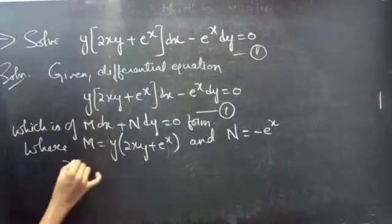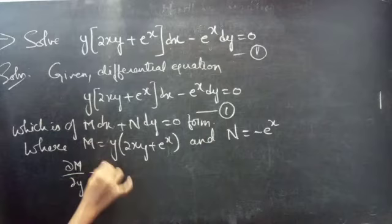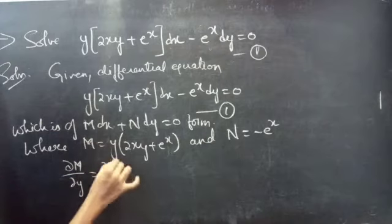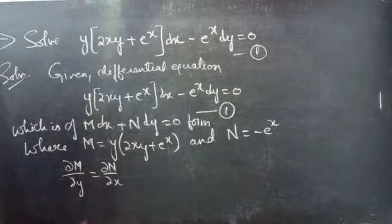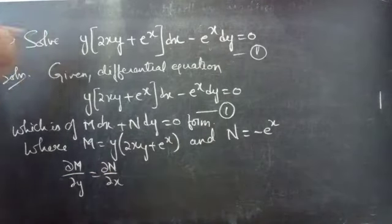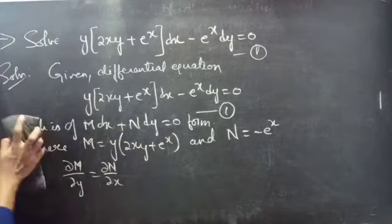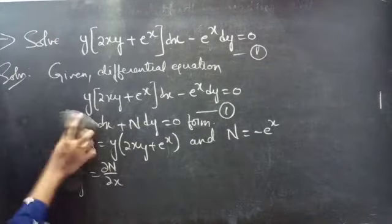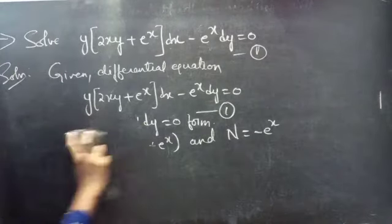If the partial derivative of M with respect to y equals the partial derivative of N with respect to x, then the given differential equation is an exact equation. So let's find ∂M/∂y and ∂N/∂x.